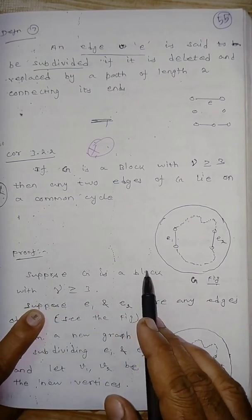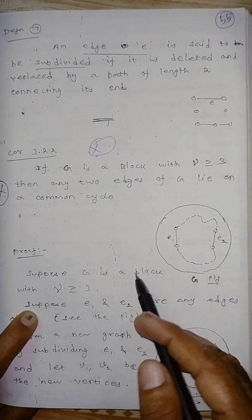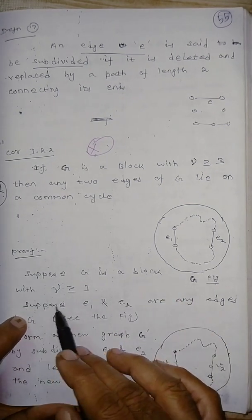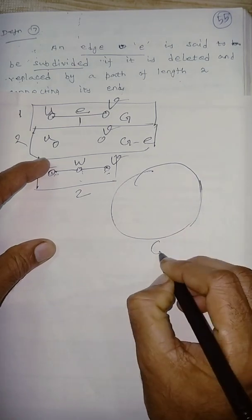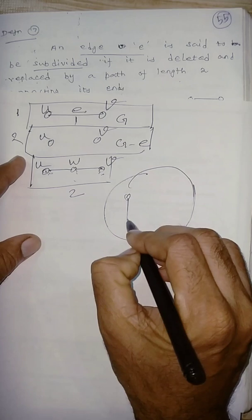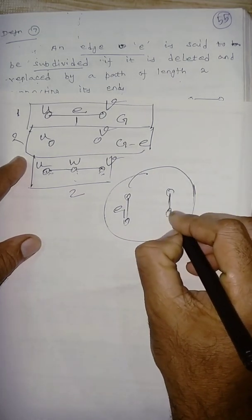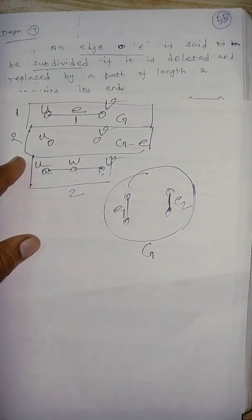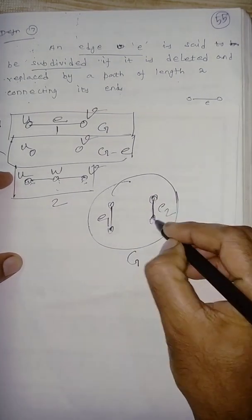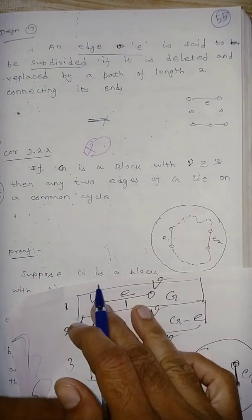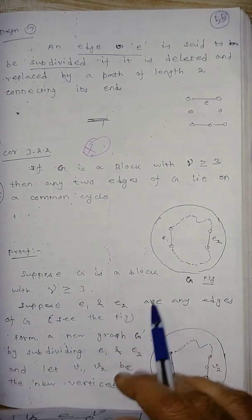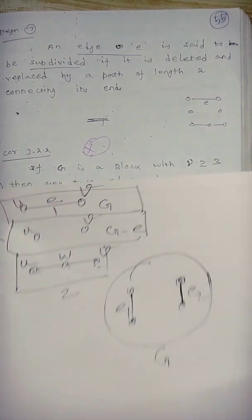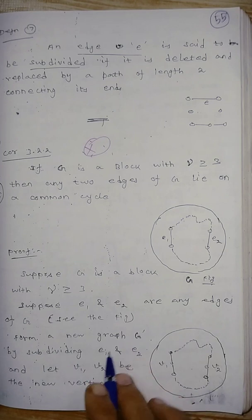Proof: Suppose G is a block — that is, the graph has no cut vertices — with number of vertices greater than or equal to 3. Suppose e1 and e2 are any two edges of G. Form a new graph G-dash.